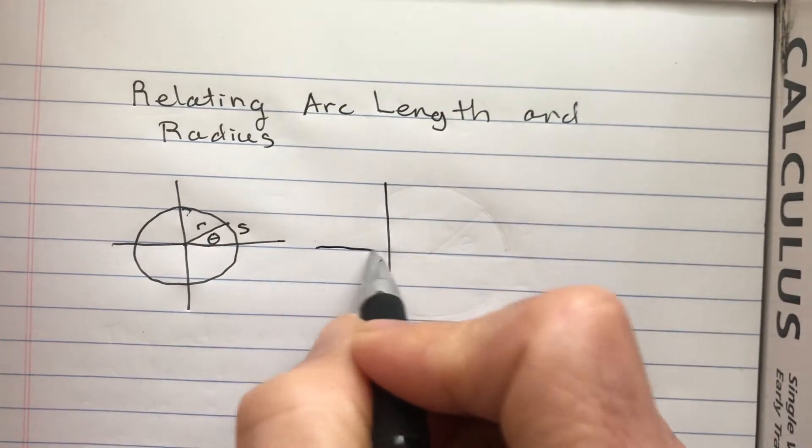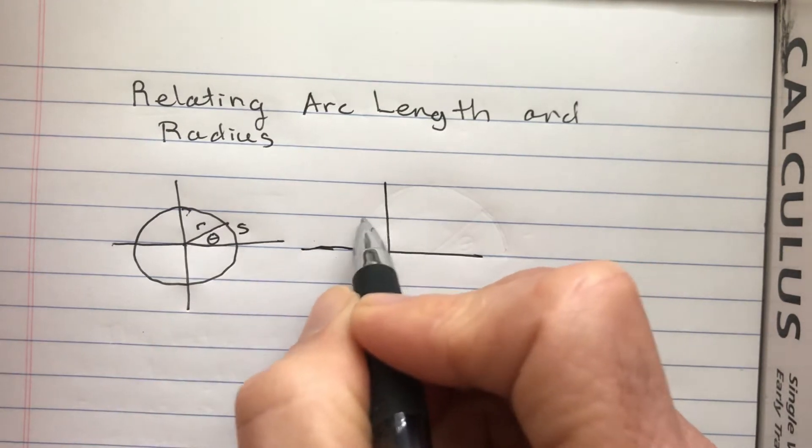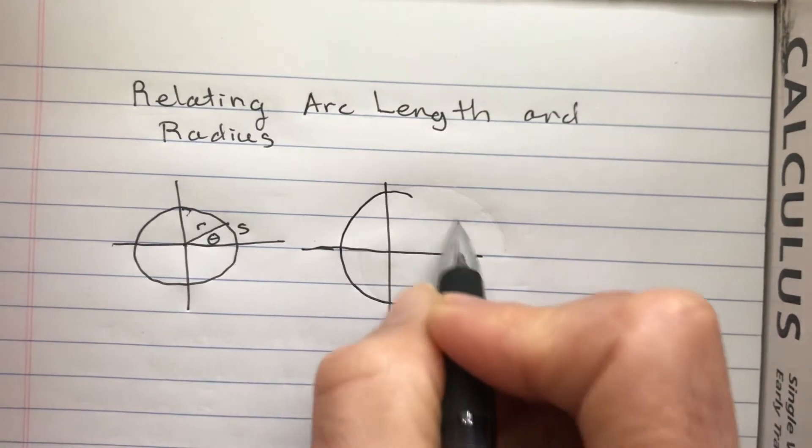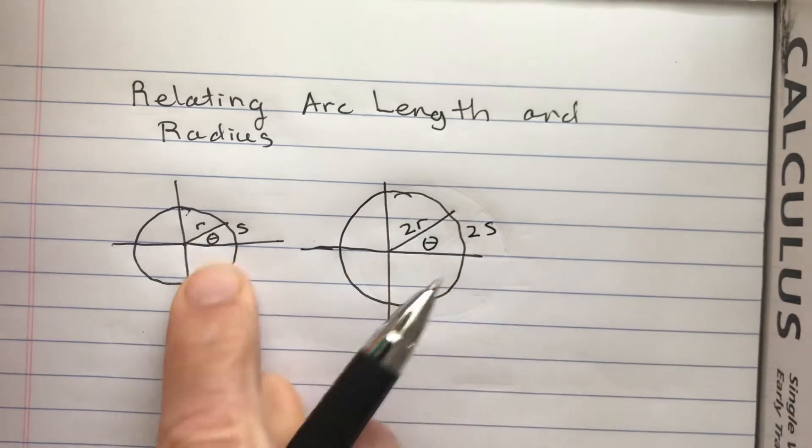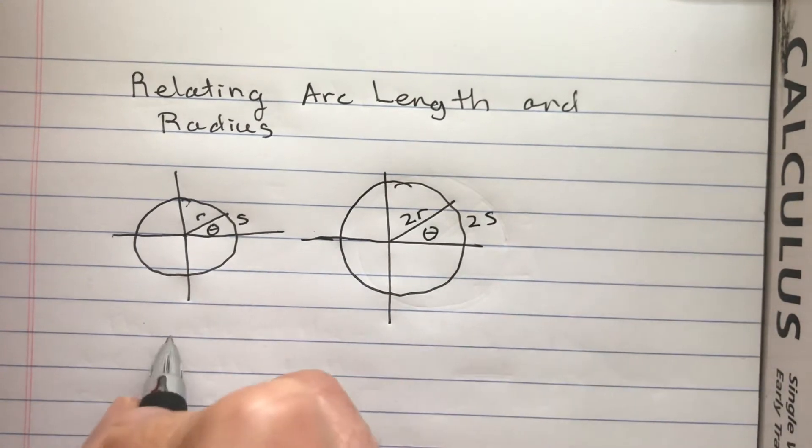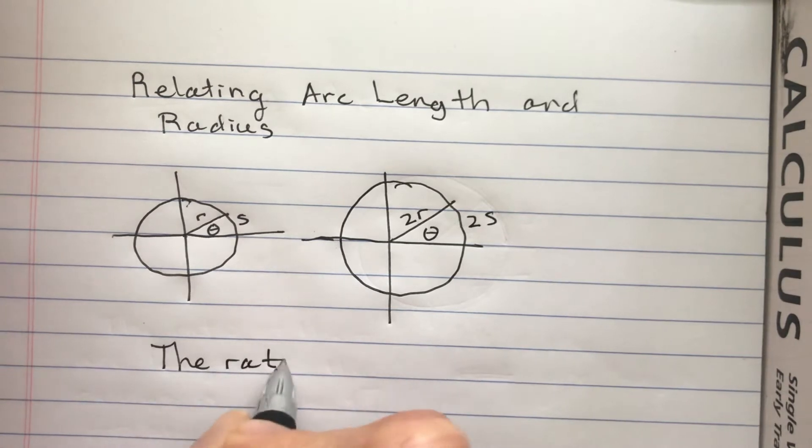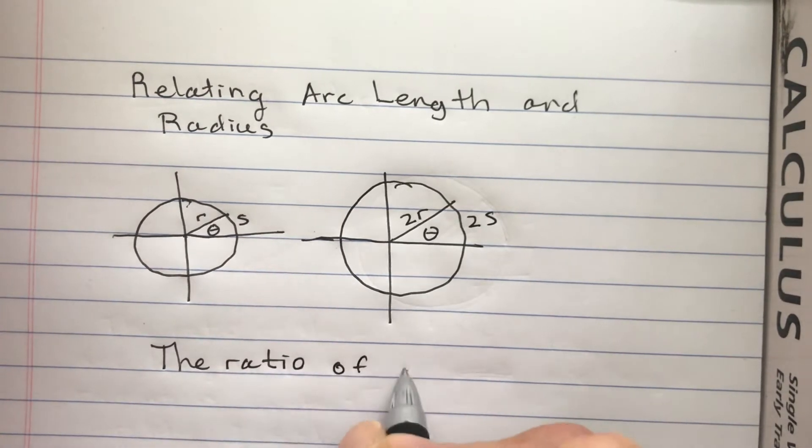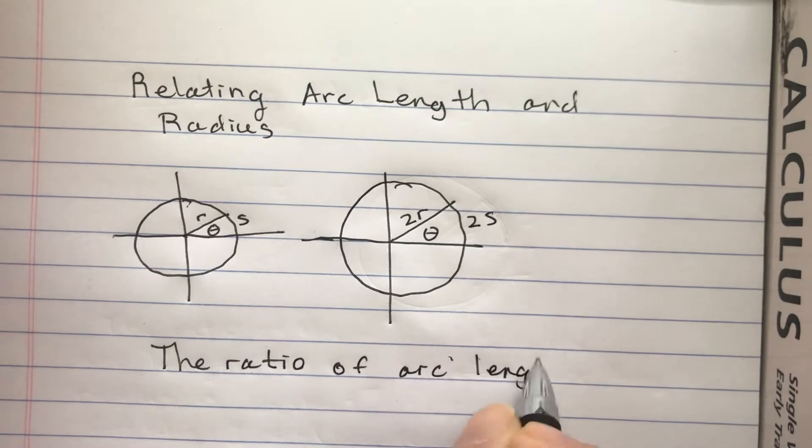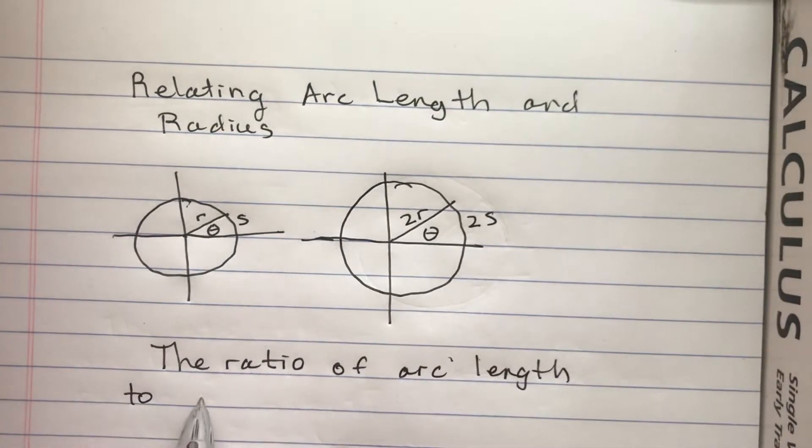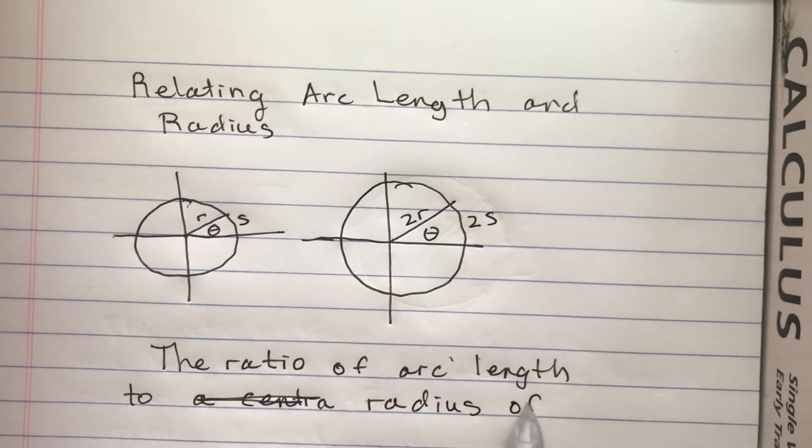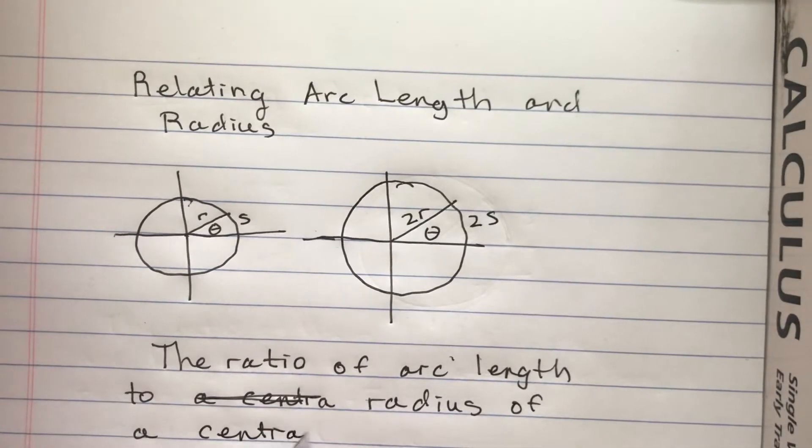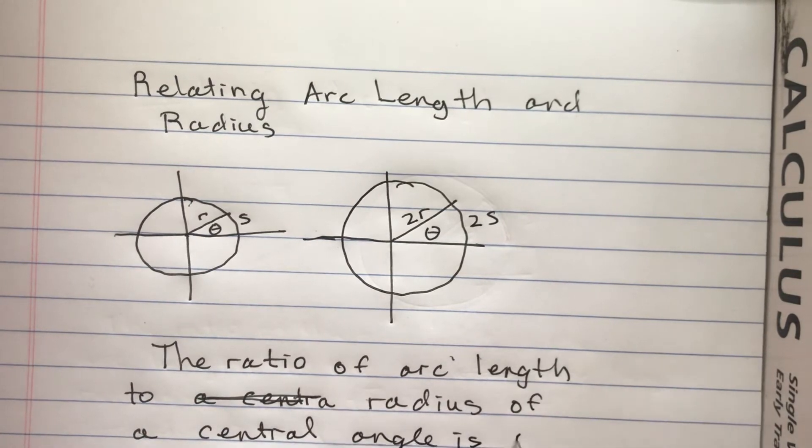And now what would happen if I just tried to multiply the radius by 2? Well, you can see I didn't do it very well. But if I do that, theta is going to be the same. So the ratio of arc length to radius of a central angle is constant.